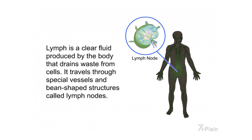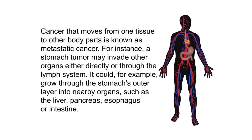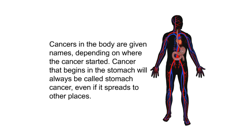Lymph is a clear fluid produced by the body that drains waste from cells, traveling through special vessels and bean-shaped structures called lymph nodes. Cancer that moves from one tissue to other body parts is known as metastatic cancer. A stomach tumor may invade other organs directly or through the lymph system, growing into nearby organs such as the liver, pancreas, esophagus, or intestine. Cancer is named after where it started, so stomach cancer will always be called stomach cancer even if it spreads.